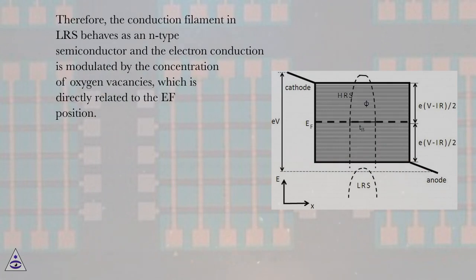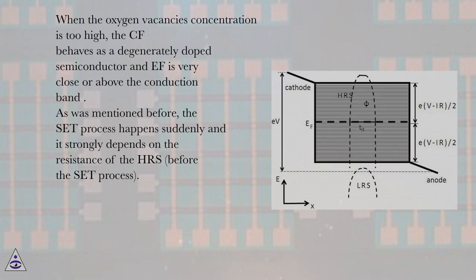Therefore, the conduction filament in LRS behaves as an N-type semiconductor and the electron conduction is modulated by the concentration of oxygen vacancies, which is directly related to the EF position. When the oxygen vacancies concentration is too high, the CF behaves as a degenerately doped semiconductor and EF is very close or above the conduction band.